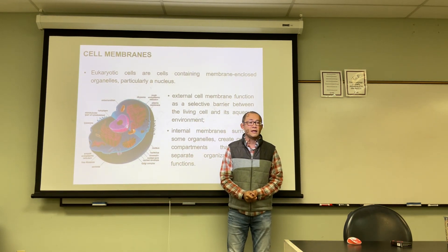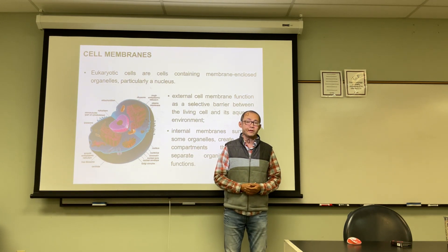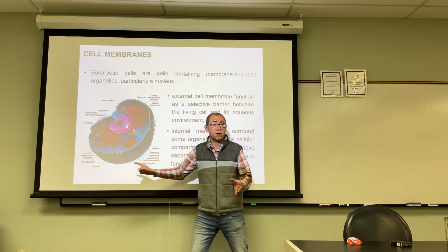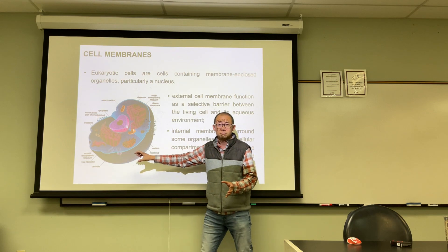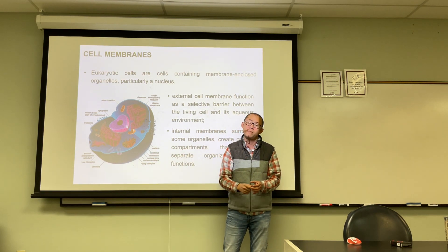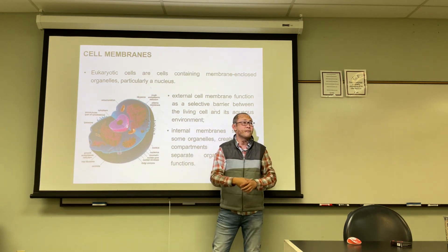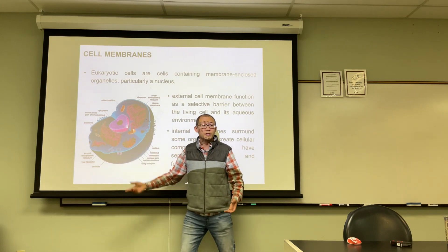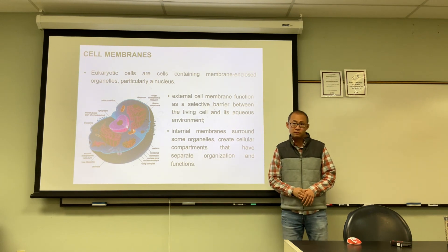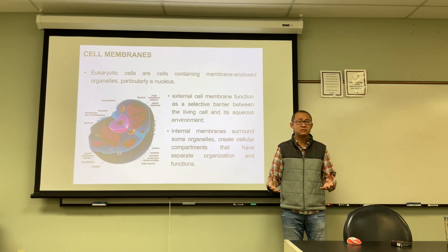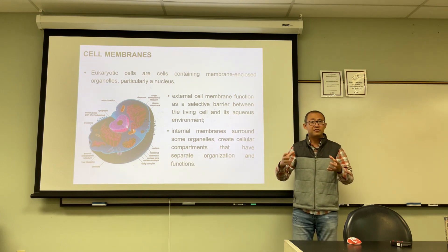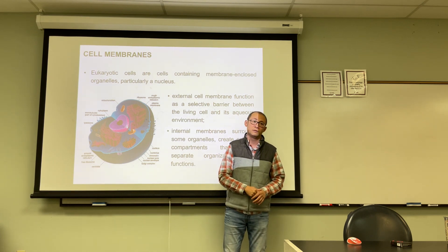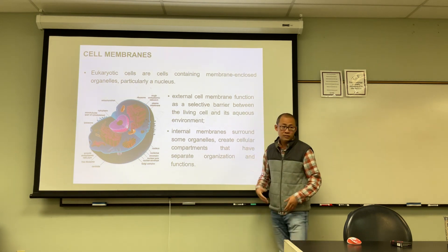Our human cells are eukaryotic cells. The main difference between our cells and bacterial cells is that we have a cell membrane, and our main cellular organelles — the functional compartments of each cell — are enclosed in membranes. Our DNA is enclosed in the membrane-bound nucleus. Membranes form more advanced compartments separating the cell from the external environment and separating functional components within a single cell.